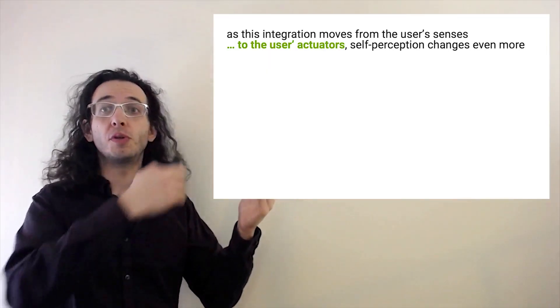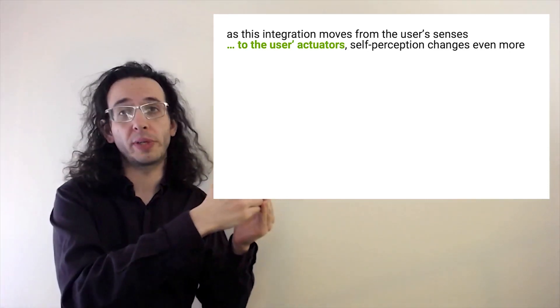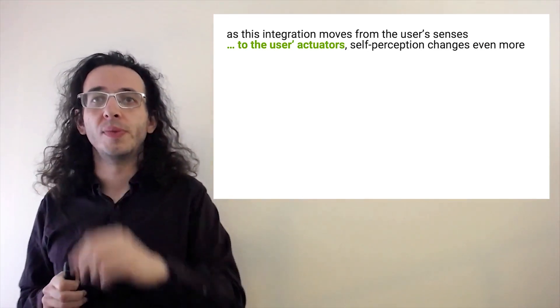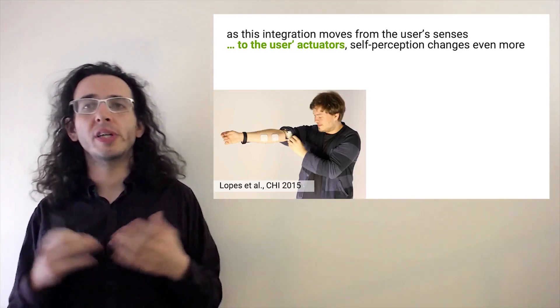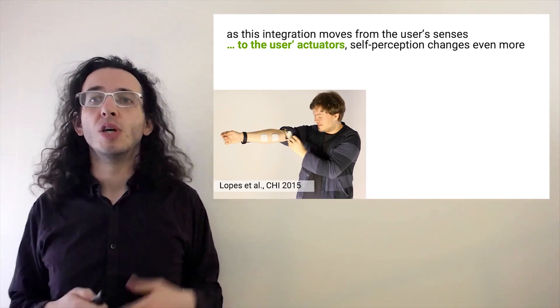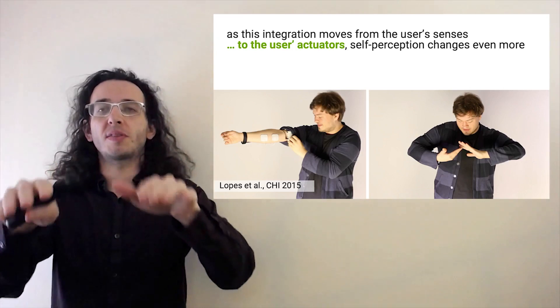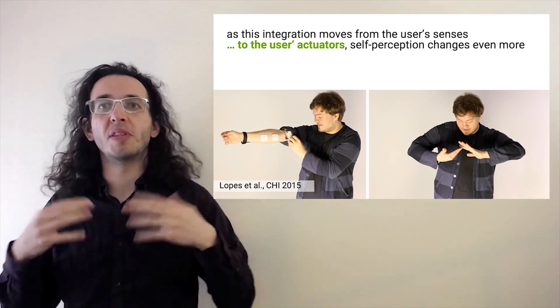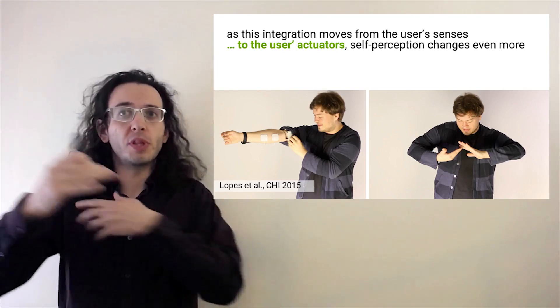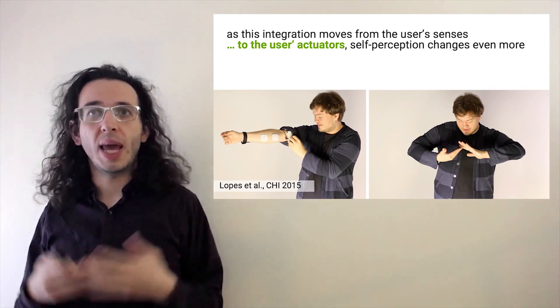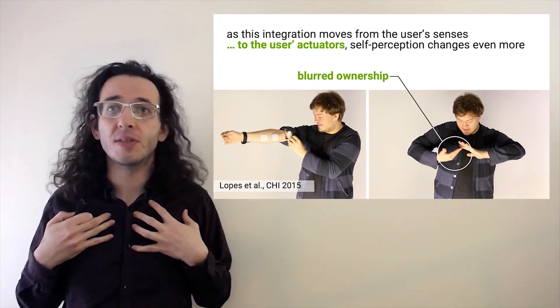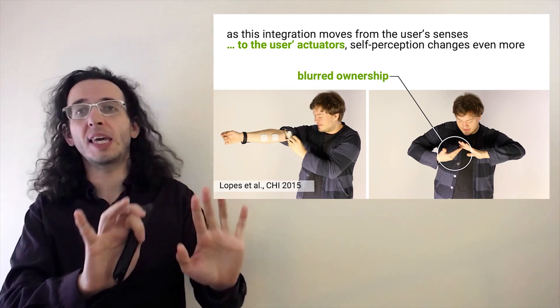Now, these devices do this by tricking our optical sense. But as this integration moves further from the user's senses into the actual user's actuators, like their muscles, self-perception changes even more because we can now manipulate self-action. For example, in one of my early projects using muscle stimulation, I created a variation of a popular children's game called Red Hands or Slapsies, in which two people are playing and one tries to slap and the other tries to avoid, here played by one player. Now here the trick is that your involuntary hand is controlled by means of muscle stimulation and you're trying to avoid with the hand that is under your control. When my participants tried this out, what happened is that they reported a sense of blurred ownership, sometimes referring to their computer-controlled hand as part of their own body and sometimes as an interactive device that they just played a game with almost outside of themselves.